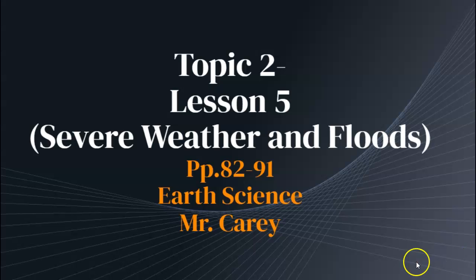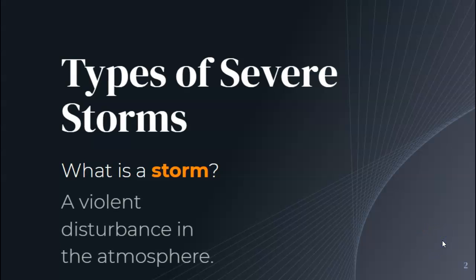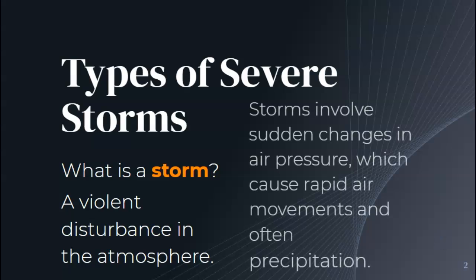Page 82. Severe Weather and Floods. Types of severe storms. What is a storm? Well, the scientific definition is a violent disturbance in the atmosphere. Storms involve sudden changes in air pressure, which cause rapid air movements and often precipitation.